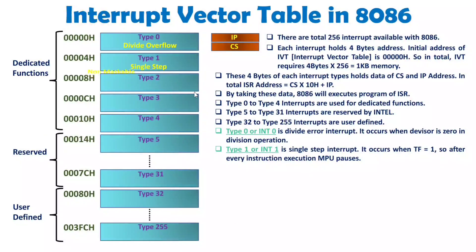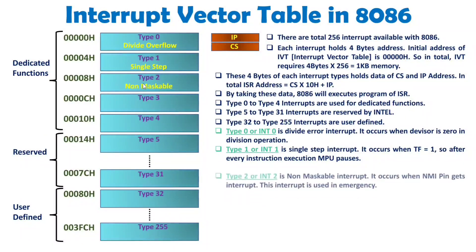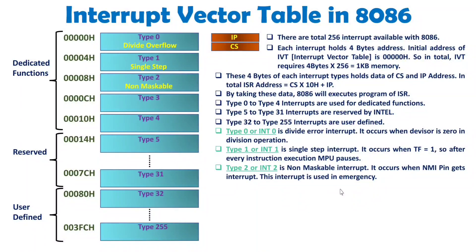Type 2 is the Non-Maskable Interrupt (NMI). This is a hardware interrupt that is triggered by an edge-triggered signal on the NMI pin. We use the NMI interrupt in emergency situations.